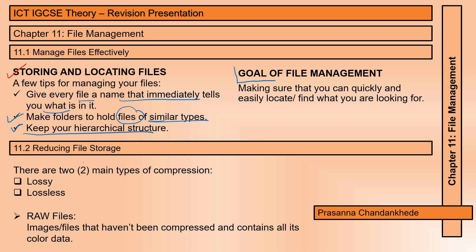The goal of file management is really important — we are learning this to ensure you can quickly and easily locate what you're looking for. Moving on, the next subtopic is reducing file storage. There are two main types of compression: lossy and lossless.